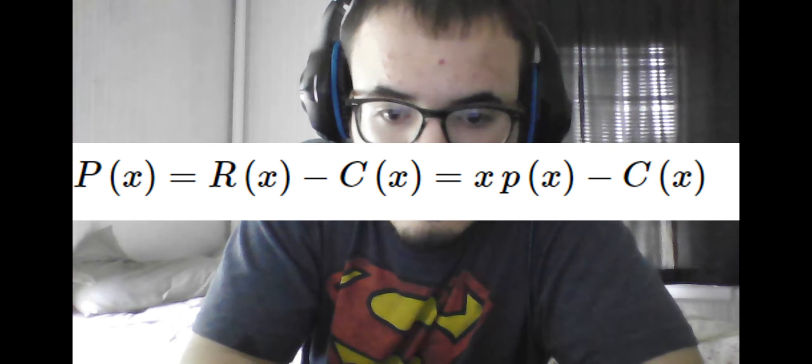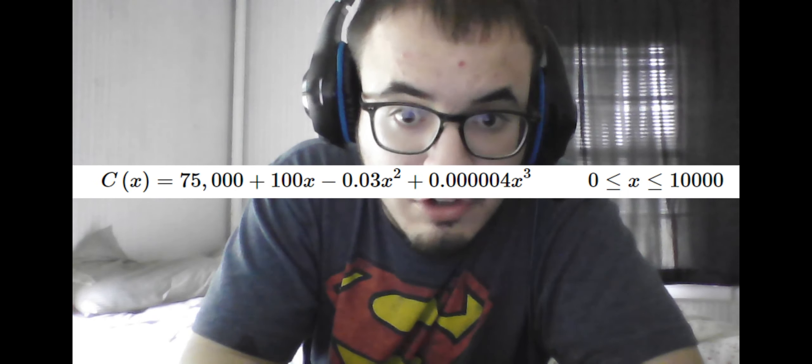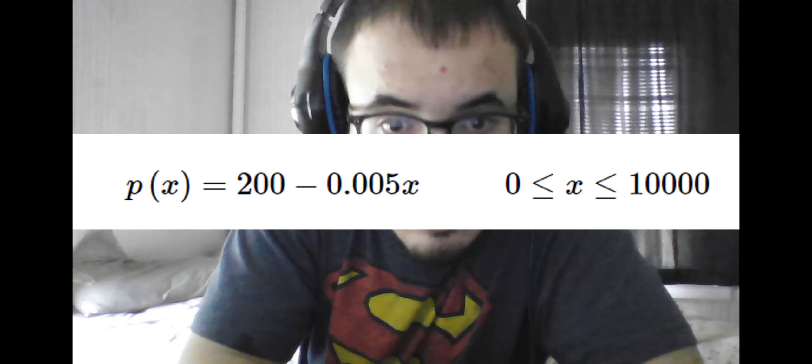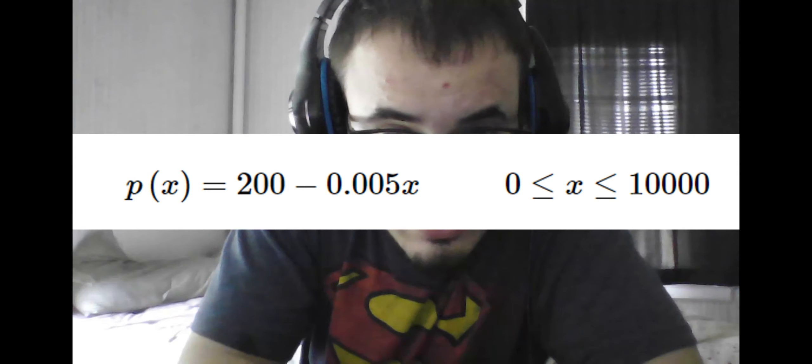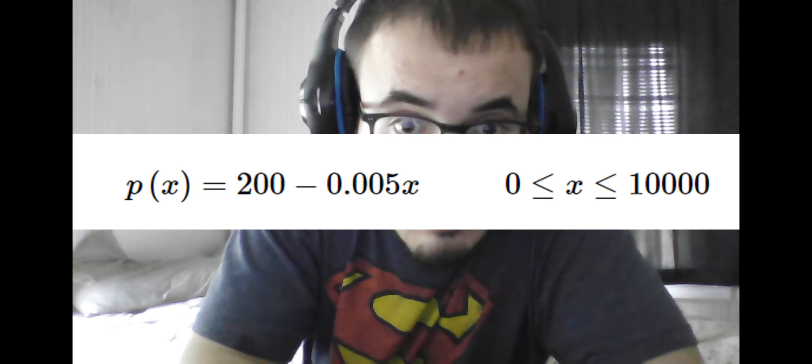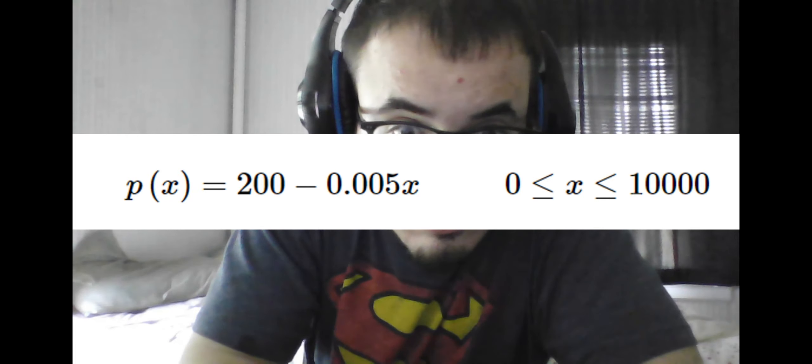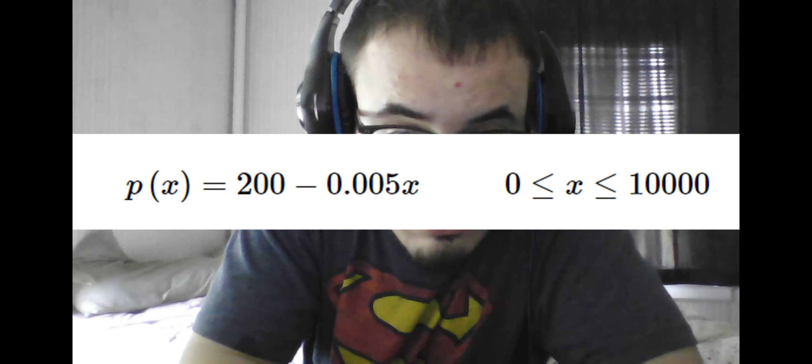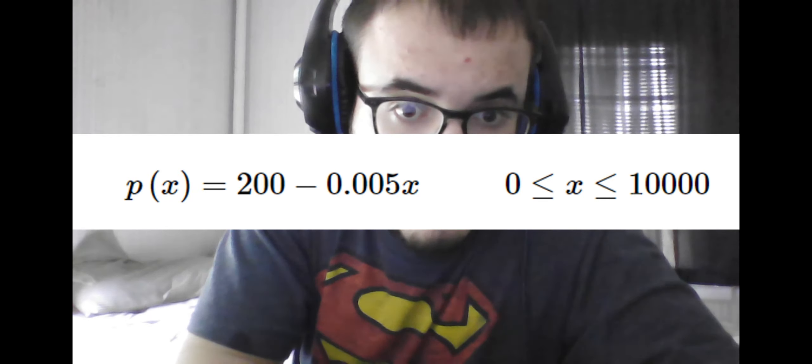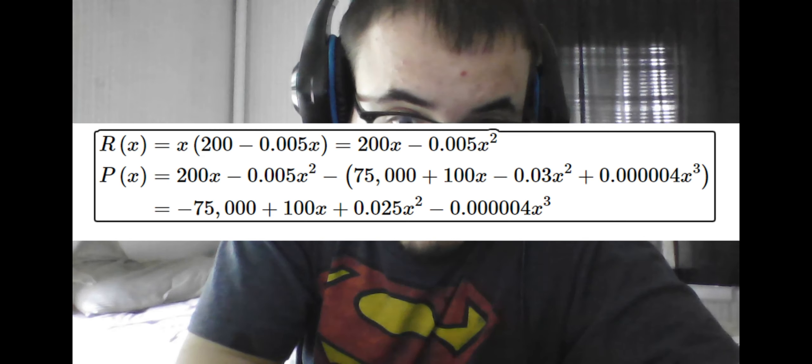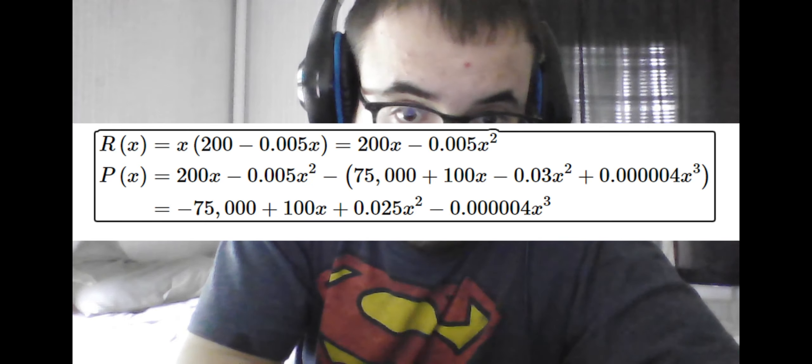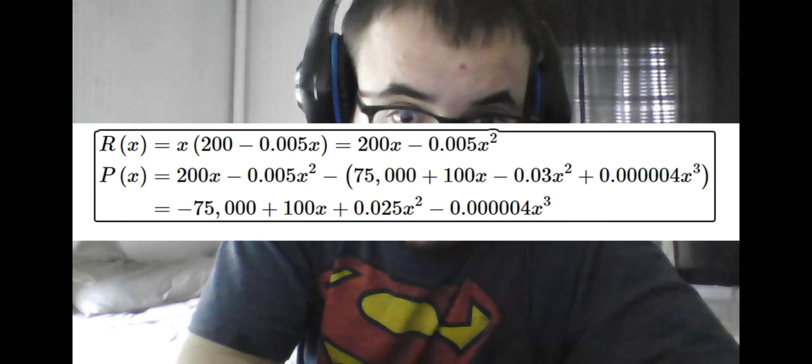For example, if we are given this cost function and this demand function, and asked to determine the marginal revenue, marginal profit, and marginal cost for the selling of 2,500 widgets and 7,500 widgets, we would first take the revenue as the multiplication of the number of widgets times the demand function, then subtract the cost function given earlier from this to get the total profit.